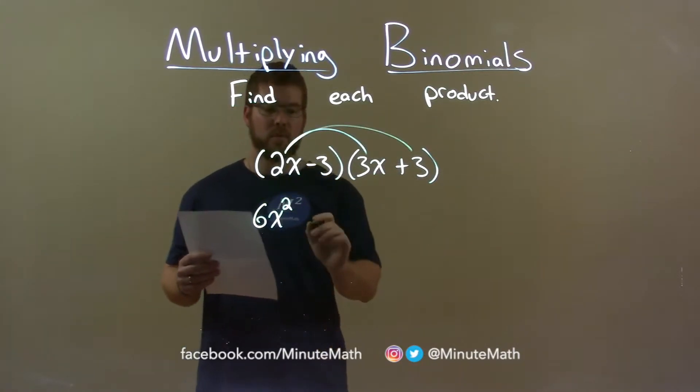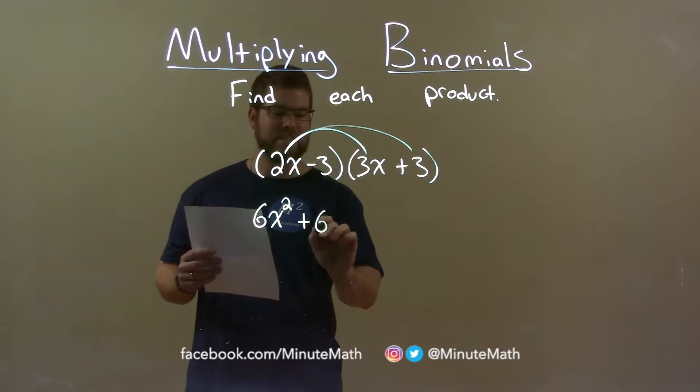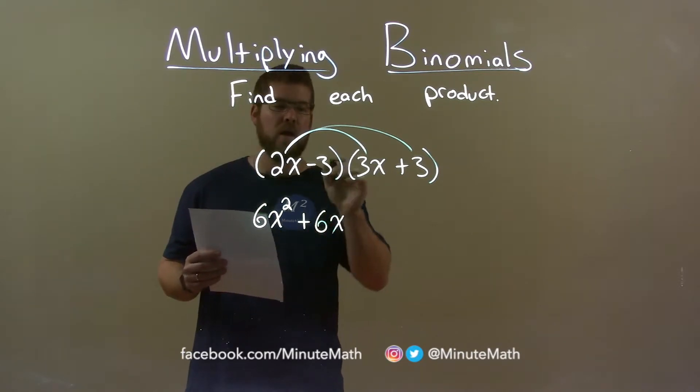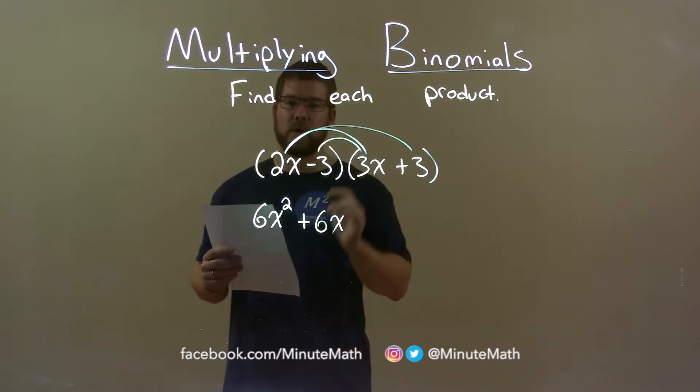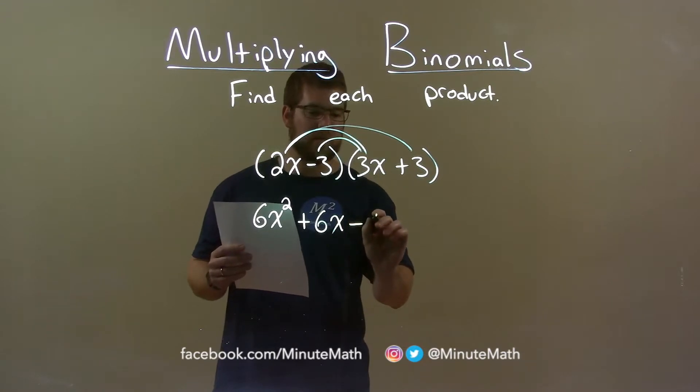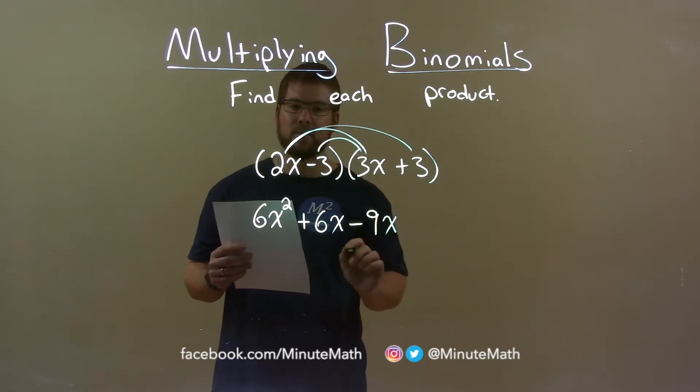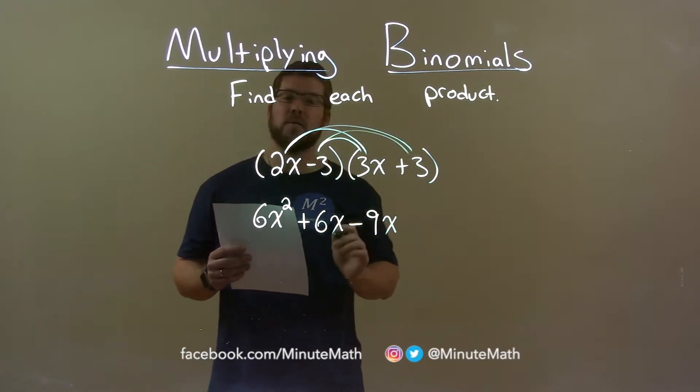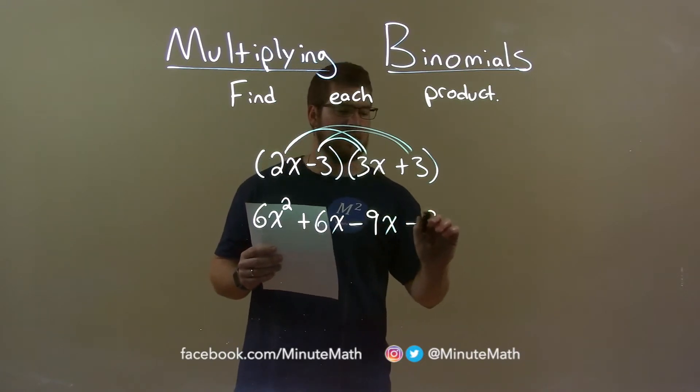2x times 3 is just 6x. Minus 3 times positive 3x is minus 9x. And minus 3 times positive 3 is minus 9.